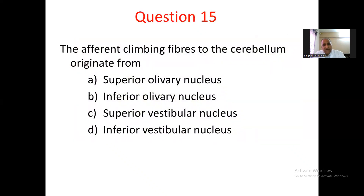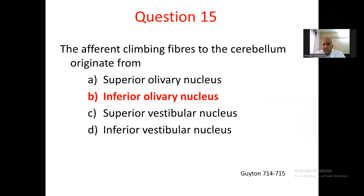Question number 15. The afferent climbing fibers to the cerebellum originate from: A. superior olivary nucleus, B. inferior olivary nucleus, C. superior vestibular nucleus, D. inferior vestibular nucleus. The answer is B. inferior olivary nucleus. These fibers reach the cerebellum, climb the Purkinje cells, and make synaptic contact with the dendrites of the Purkinje cells. The climbing fibers to the cerebellum originate from the inferior olivary nucleus — correct response.